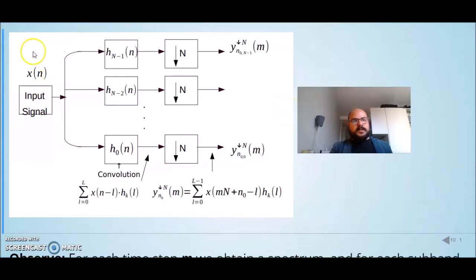So in this diagram, we can see our input signal x. We can see these boxes, the H, that they are representing impulse responses of filters and the convolution operation. We have our boxes for our downsamplers with a downsampling rate equals to N, and we have our result Y.